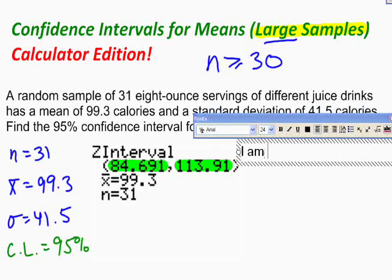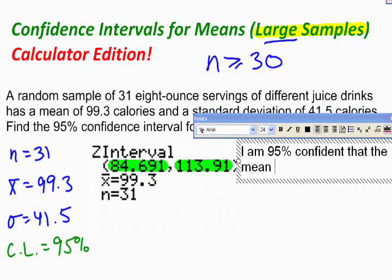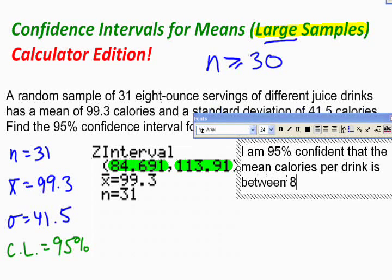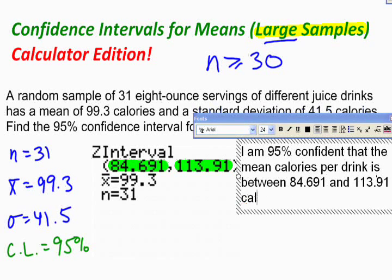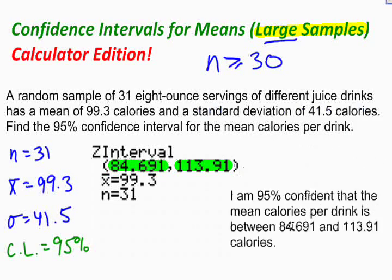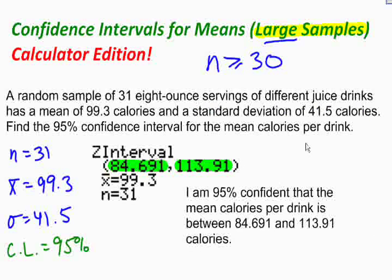I would say this: I am 95% confident that the mean calories per drink is between 84.691 and 113.91 calories. I'm being slightly redundant there by saying calories twice. But there it is. I've included all three things for my confidence interval.